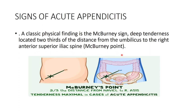The most important sign is McBurney's sign. McBurney's point is located two-thirds of the distance from the umbilicus to the anterior superior iliac spine. To check this sign, palpate the abdomen — if the patient feels deep tenderness over McBurney's point, it indicates a positive McBurney's sign and is indicative of acute appendicitis. There are also other signs of acute appendicitis.